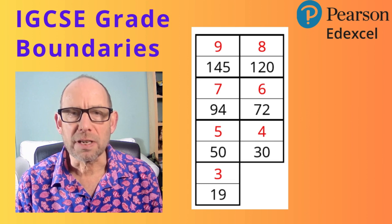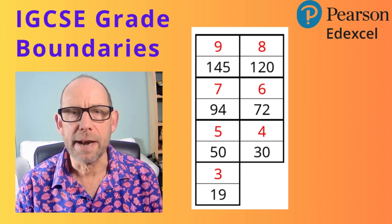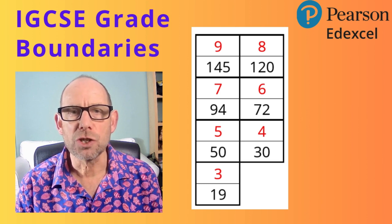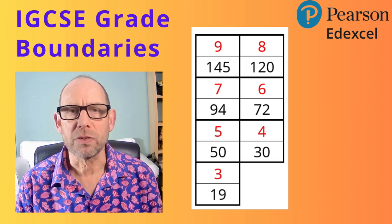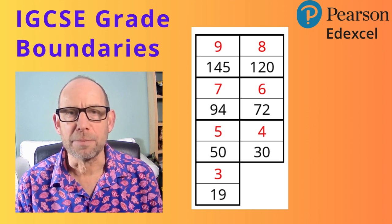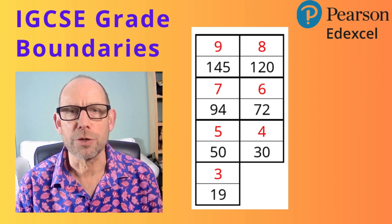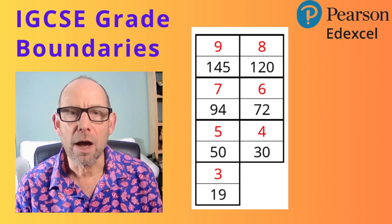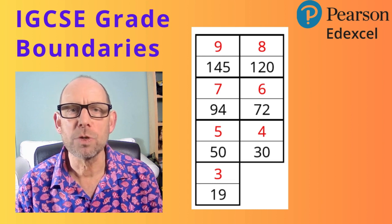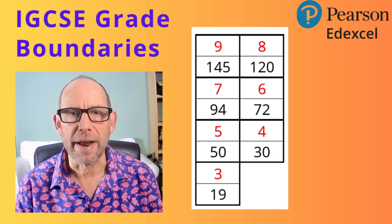So let's see how this works. You'll see that, for example, you need 145 marks to score a grade 9. That's 145 marks in total on the two papers, so each paper's out of 100, and so obviously there's a maximum score you can get of 200. On average over the last 10 years, you would have needed 145 marks in total on the two papers to get your grade 9.